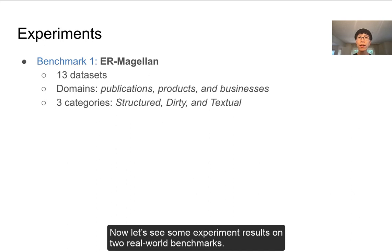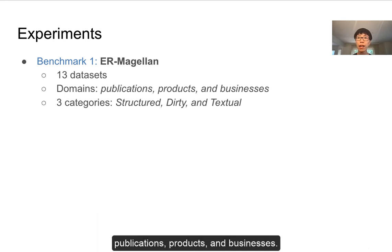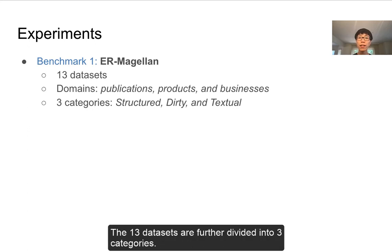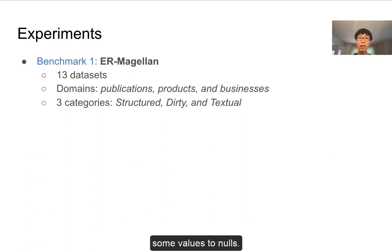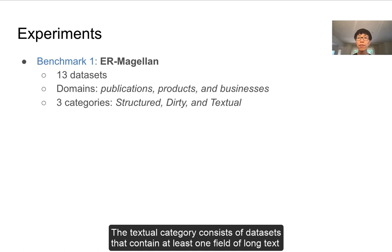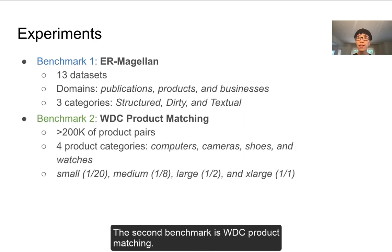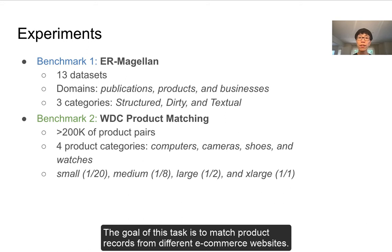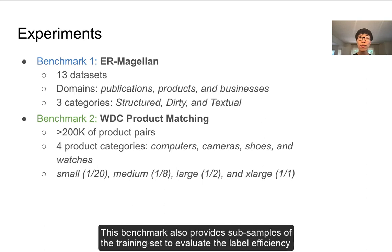Now let's see some experiment results on two real-world benchmarks. The first benchmark, ER-Magellan, consists of 13 datasets from various domains such as publications, products, and businesses. These are divided into three categories: structured (regular tables), dirty (tables with injected noise such as randomly set null values), and textual (datasets with at least one field of long text such as product descriptions or full Wikipedia articles about a company). The second benchmark is the WDC product matching dataset, which aims to match product records from different e-commerce websites. It contains over 200,000 labeled product pairs from four categories and provides subsamples to evaluate label efficiency.